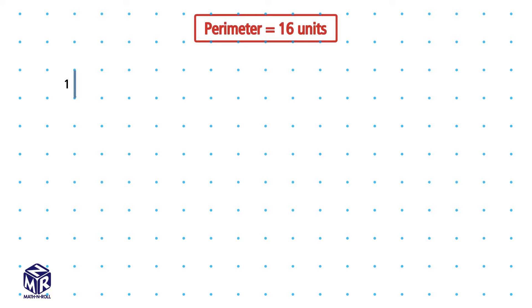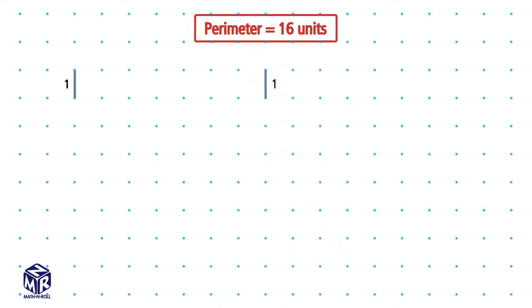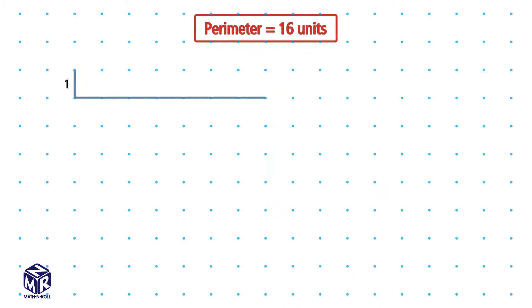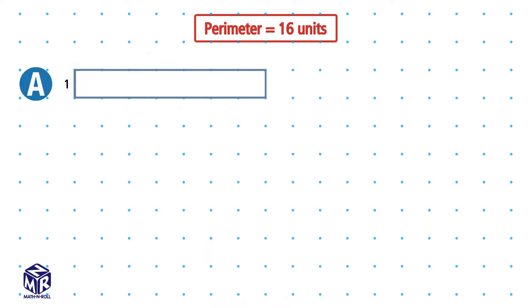The two pairs of opposite sides of the rectangles have equal lengths. So if we choose one side to be 1 unit, the opposite side will also have 1 unit. We need to find the length of the second pair of sides. To do this, we subtract the sum of the two sides — 1 plus 1 equals 2 — from the perimeter and we get 14 units. We have a pair of sides, so we divide 14 by 2 to get 7. So this rectangle with a perimeter of 16 has two 1-unit sides and two 7-unit sides. We draw 7 units on the horizontal side, go 1 unit up, and then 7 units left. Rectangle A has a perimeter of 16 units and an area of 7 square units.